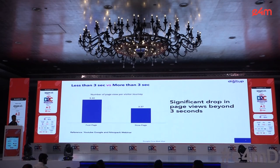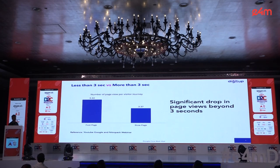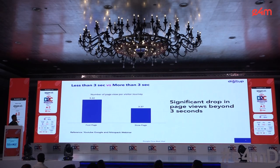Less than three seconds versus more than three seconds: studies show that the number of page views for a visitor is around 5.42 compared to only 3.37 beyond three seconds — that's the difference between fast and slow pages. That makes a lot of difference in terms of purchasing. If every interaction is happening as per the user experience metrics, then you're likely going to make more sales compared to a slower page. Of course, it's important to have good content marketing and good product — those aspects are important — but this is the fundamental that one needs to look at.